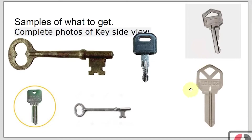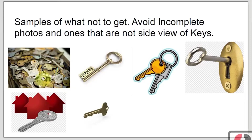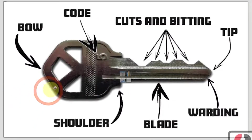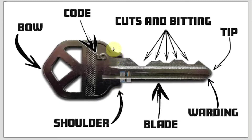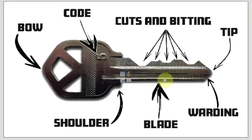I recommend looking at some keys — these are some good sample photos to get. I would avoid angled views or something very busy. A typical key has the head, the bow, the hole, and the shoulder. There's a code, maybe if you're working in a large organization. The teeth or cuts and biting, also referred to as the tip. The warding is the groove, and the blade itself or stem.